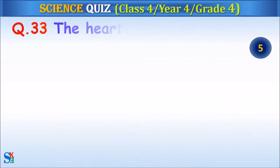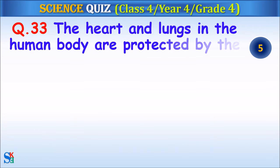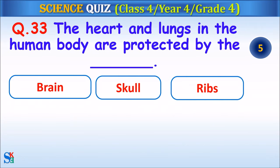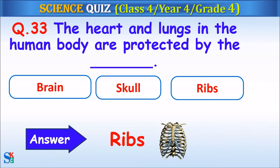Question 33: The heart and lungs in the human body are protected by the — brain, skull or ribs? Your time starts. The answer is ribs.